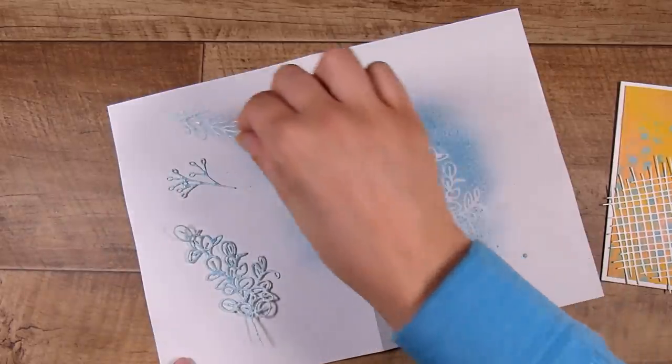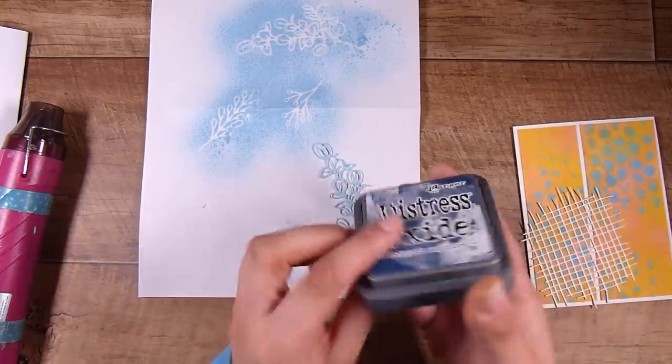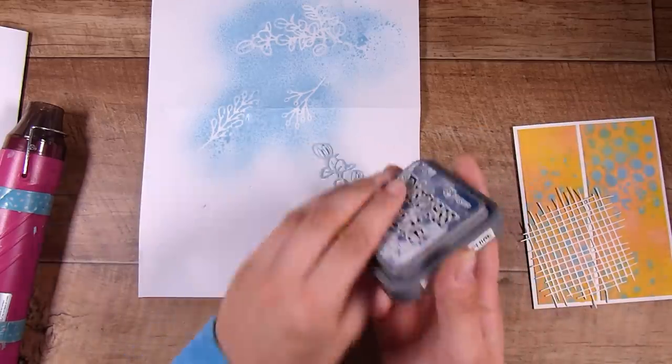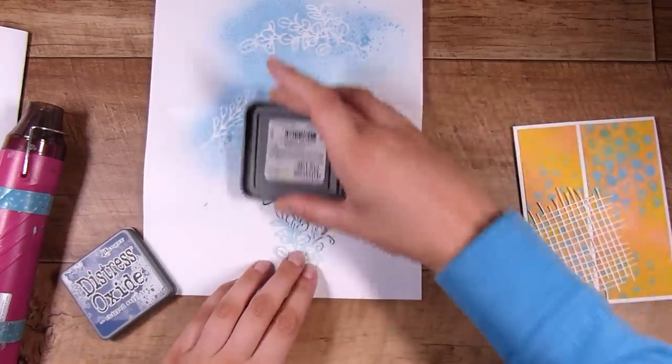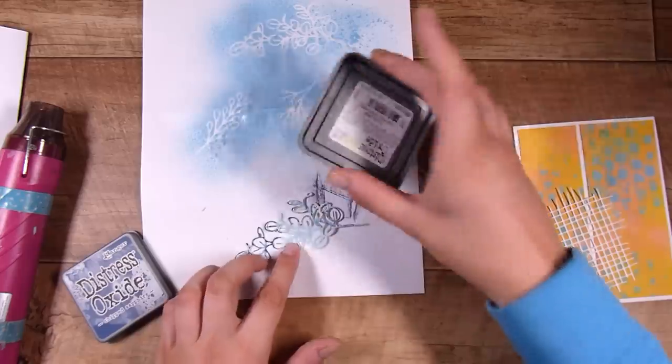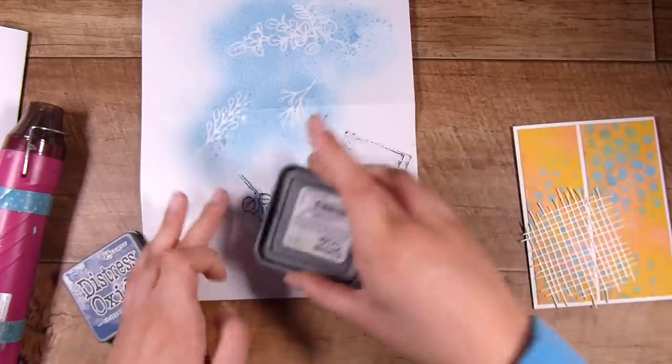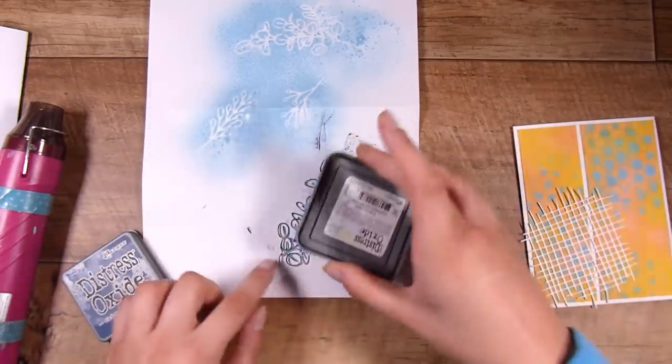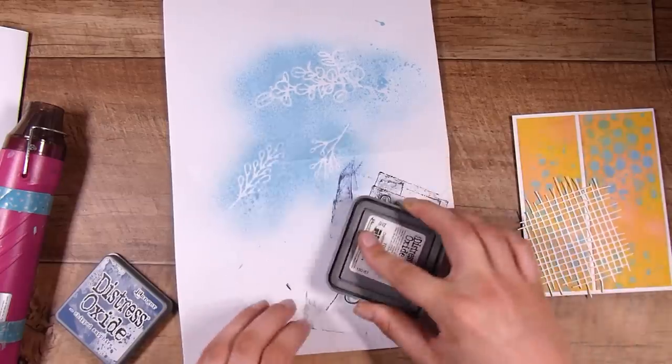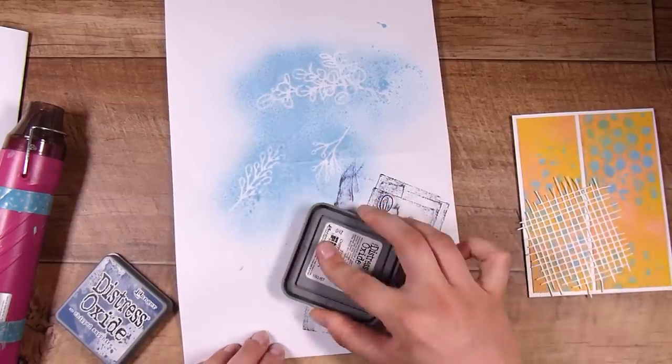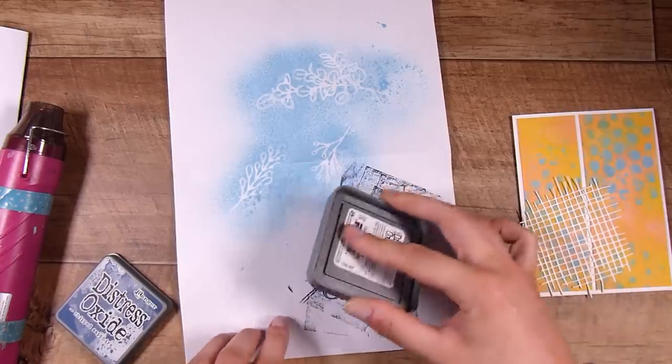Another couple of my ultra favorites actually happen to both be by Pink Fresh Studios and one of those is the Curvy Leaves dies and the other one is Dainty Blossoms. I have used these in so many videos. These gorgeous little sprigs of leaves and twigs and little dainty flowers, some foliage is always a really fantastic way to embellish a card front.